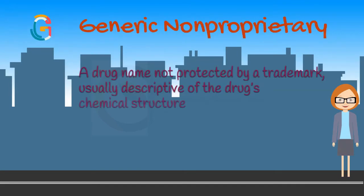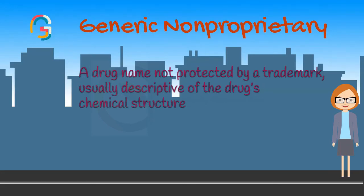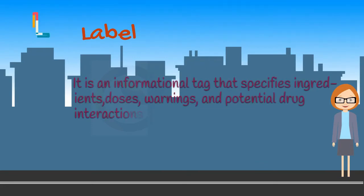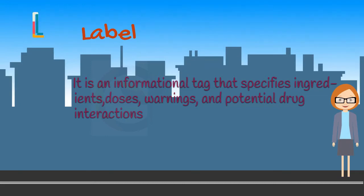Letter G. Generic non-proprietary — a drug name not protected by a trademark, like aspirin, usually descriptive of the drug's chemical structure. Letter L. Label — it's an informational tag that specifies ingredients, doses, warnings, and potential drug interactions.